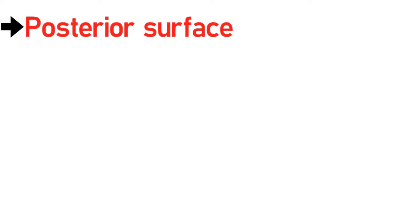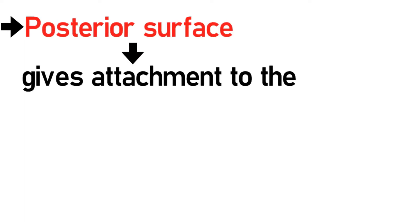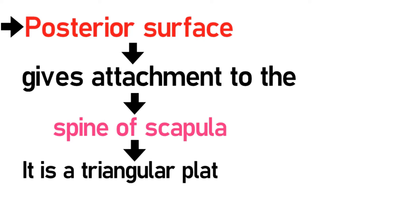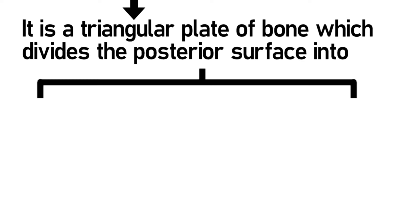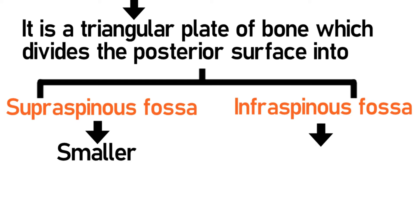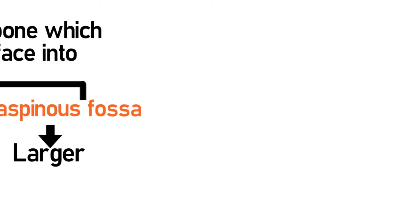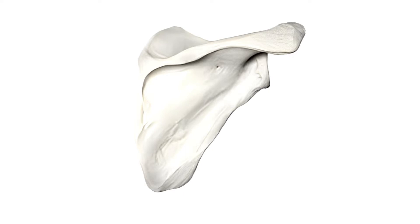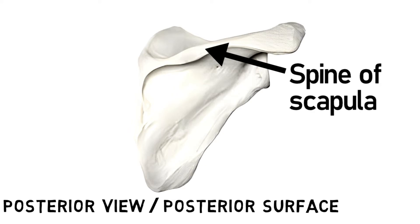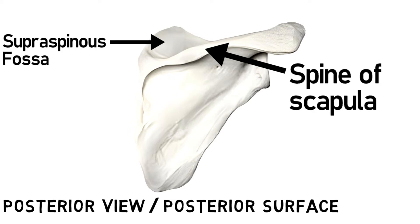The posterior surface gives attachment to the spine of scapula. It is a triangular plate of bone which divides the posterior surface into two parts: the supraspinous fossa and the infraspinous fossa. The supraspinous fossa is smaller as compared to the infraspinous fossa. This is the posterior view of the bone. This prominence is the spine of the scapula, and as you can see, it divides the posterior surface into the supraspinous fossa and the infraspinous fossa.